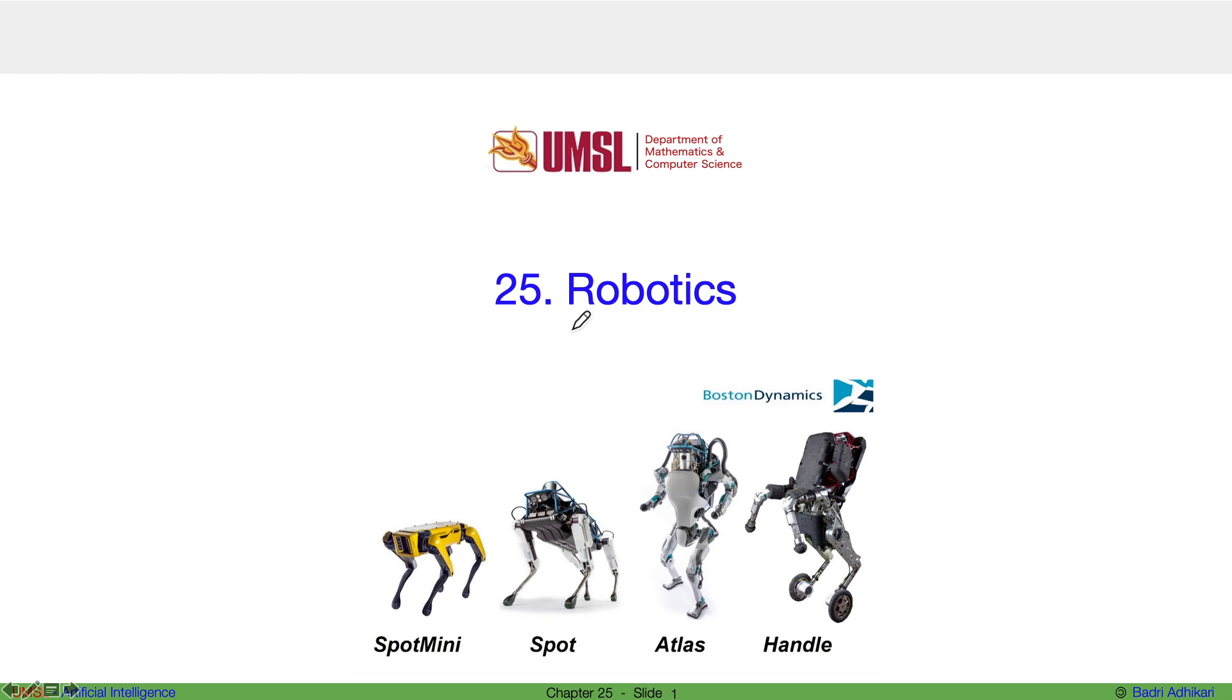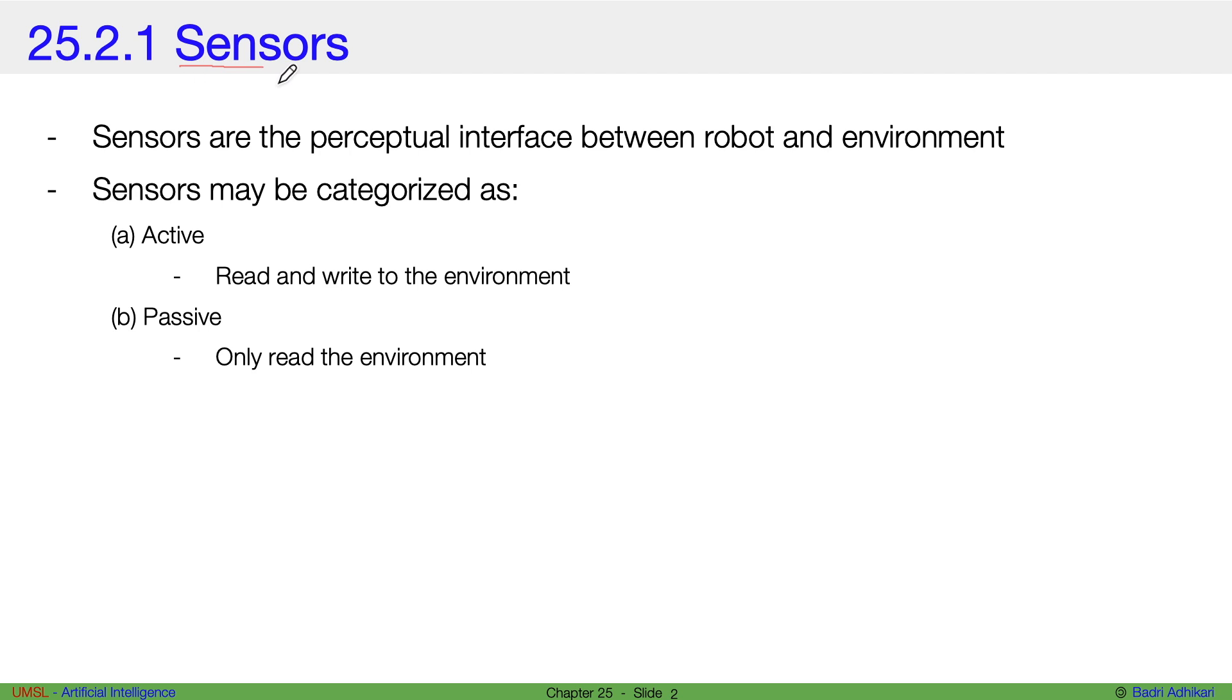This chapter is an introduction to some of the concepts in robotics. These are some of the robots developed by a successful robotics company known as Boston Dynamics. Let's start with sensors.